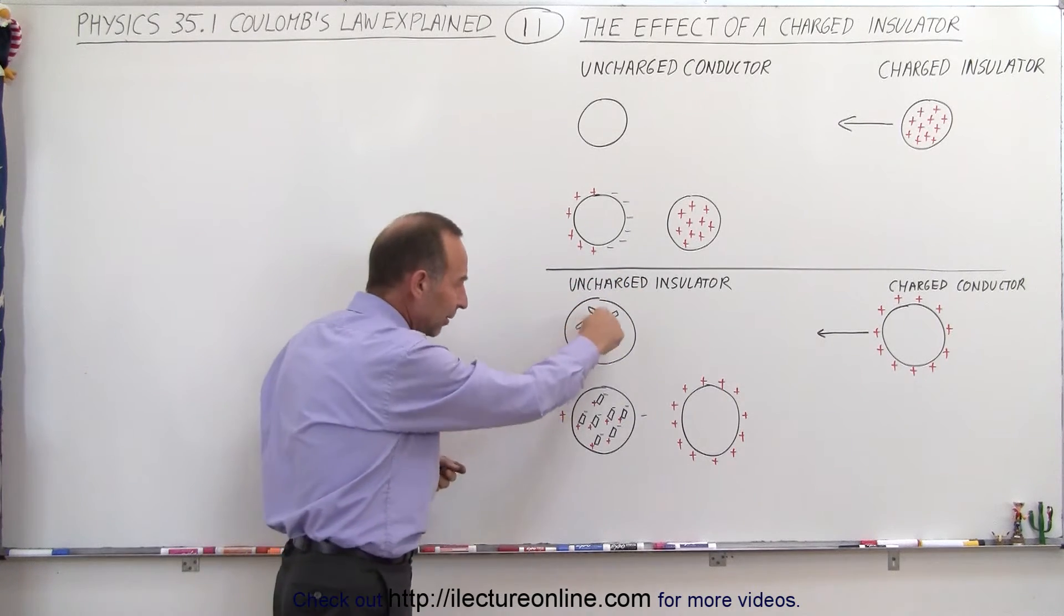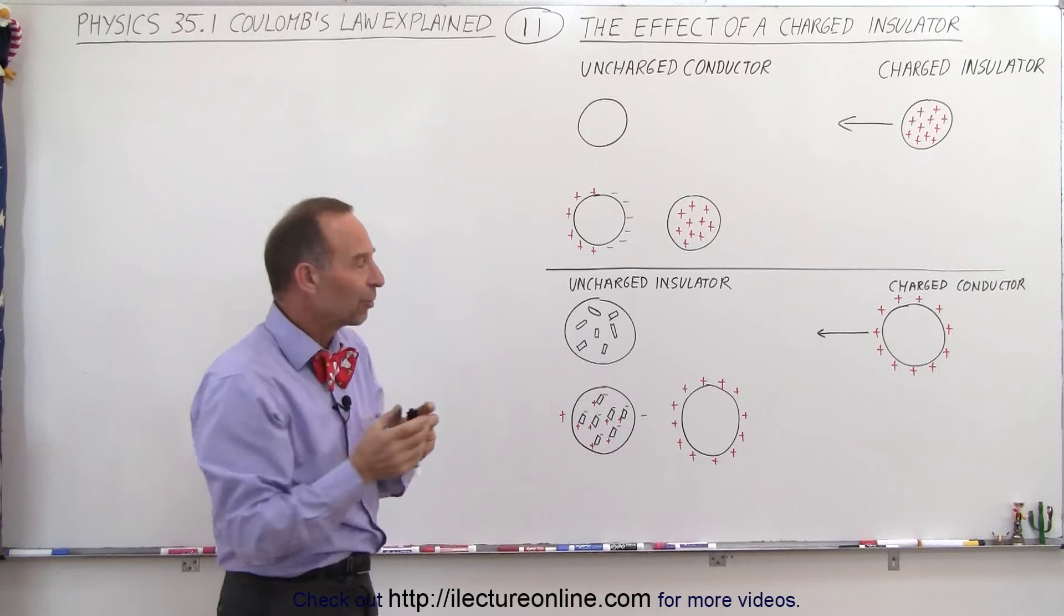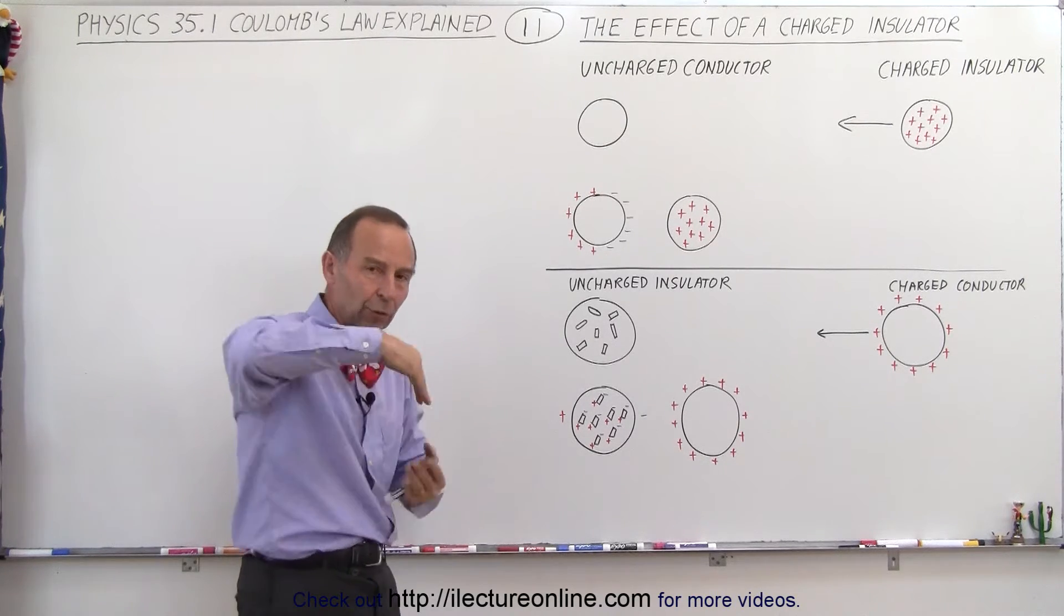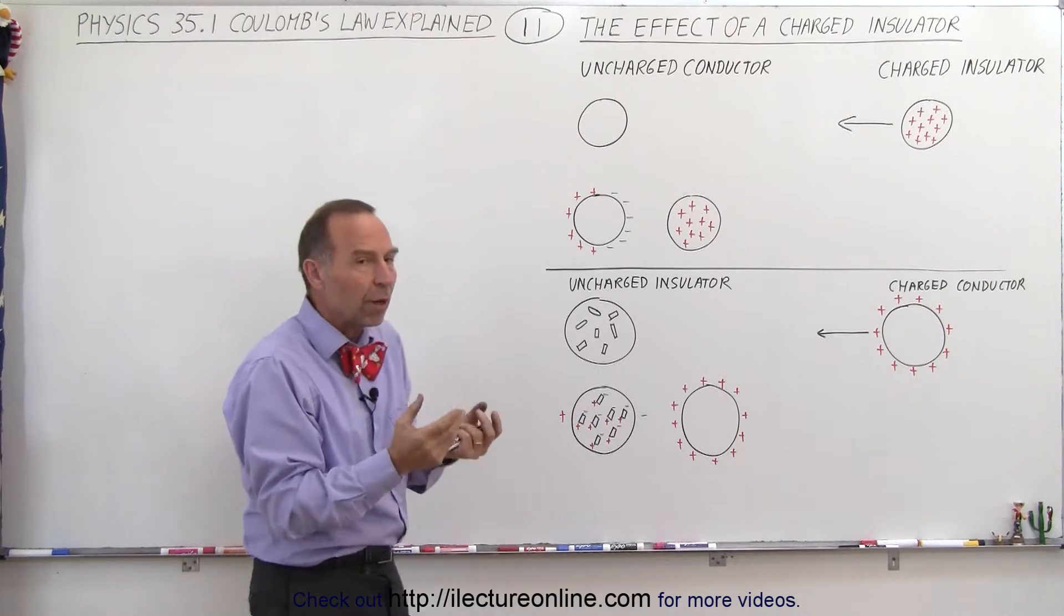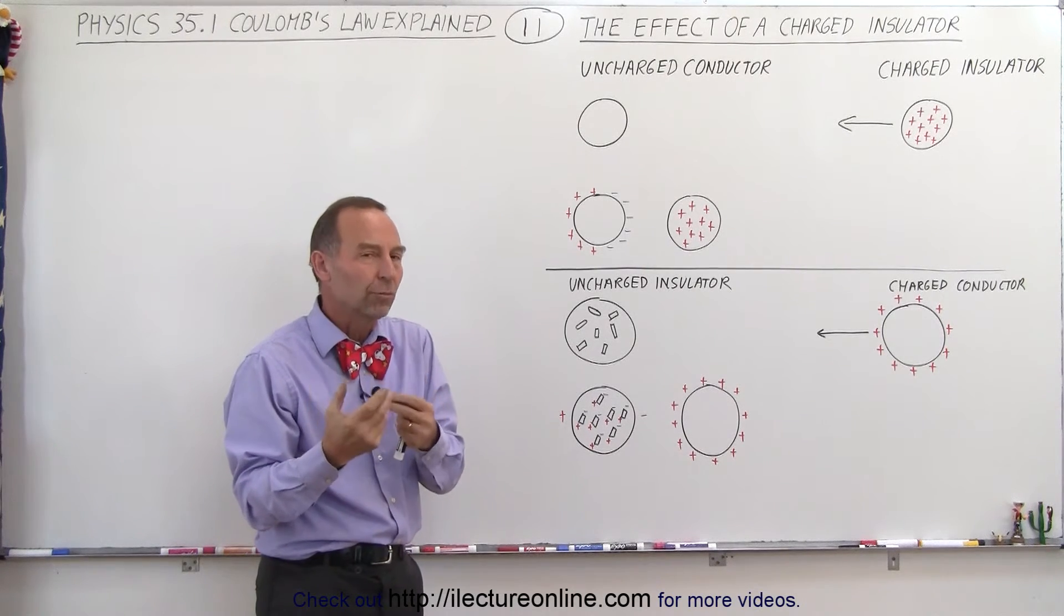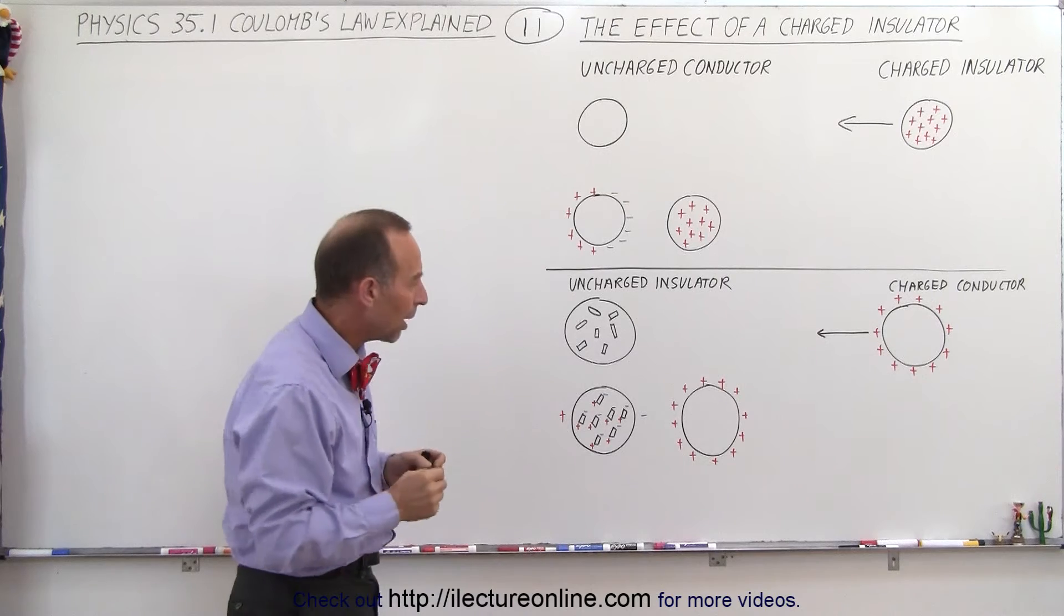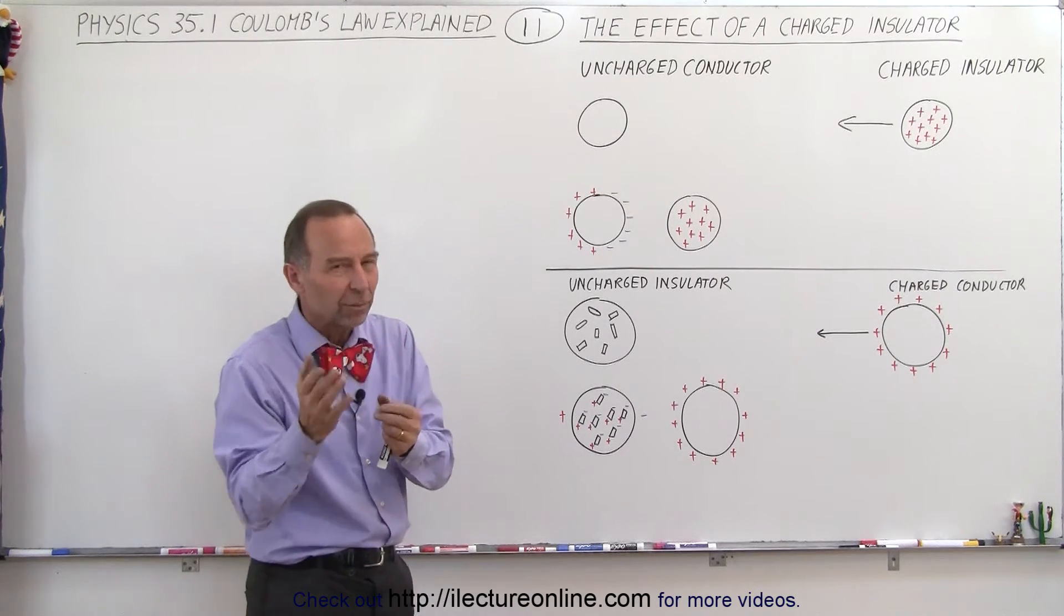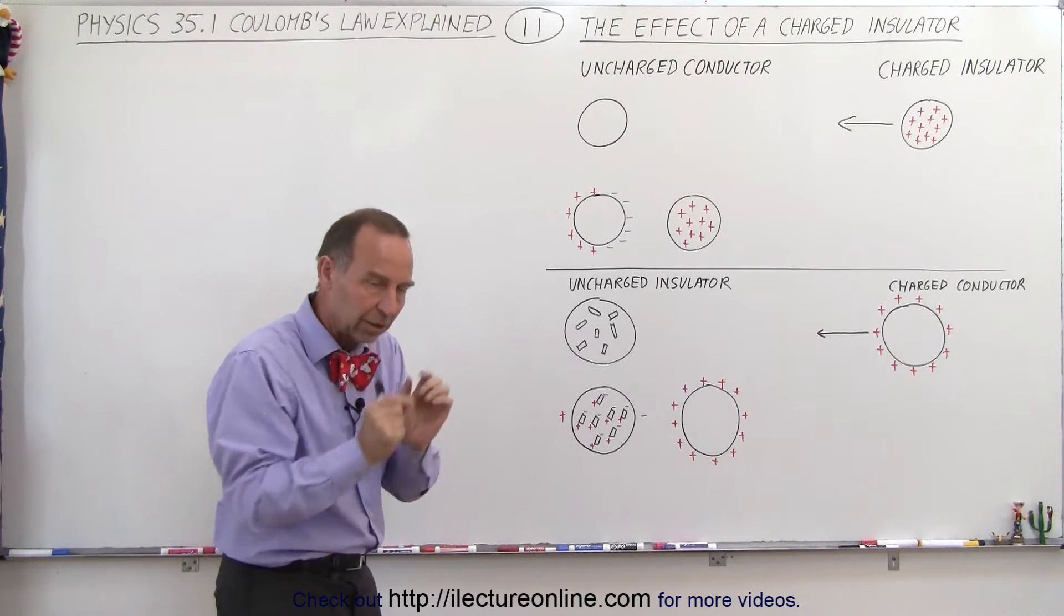These little things in here represent molecules, and molecules have a certain orientation. In most cases, molecules are somewhat polar. Most molecules tend to have a polar property, which means one side is a little bit more negative and the other side is a little bit more positive at the molecular level.